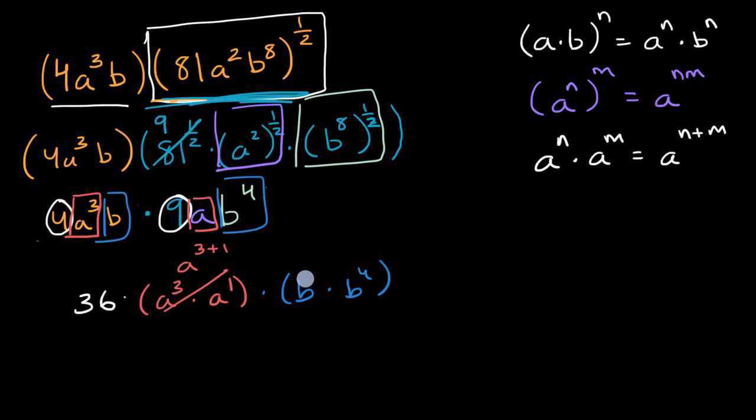And all of this is, this is b to the first. That's the same thing as b. So this is going to be the same thing as b to the one plus four power. And we are in the home stretch. This is all going to simplify to 36 times a to the three plus one is a to the fourth power, a to the fourth. And then b to the one plus four power is b to the fifth. And we are done.